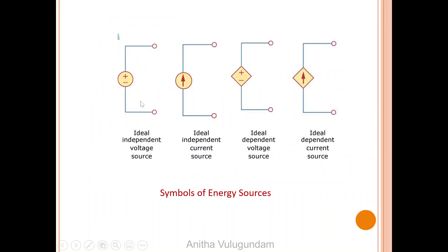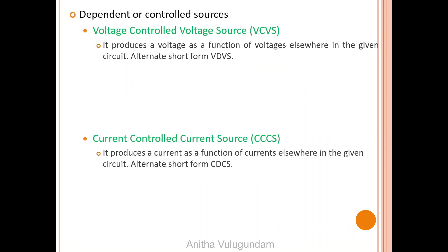This is how we represent the symbols of energy sources. This is the ideal independent voltage source symbol. This is the ideal independent current source symbol. This is the ideal dependent voltage source symbol. And this is the ideal dependent current source symbol. Dependent sources are also called as controlled sources.